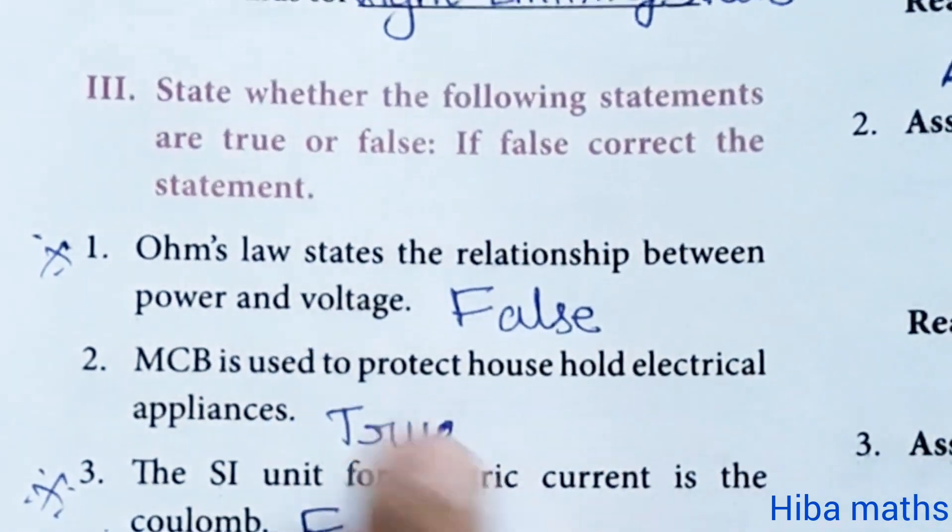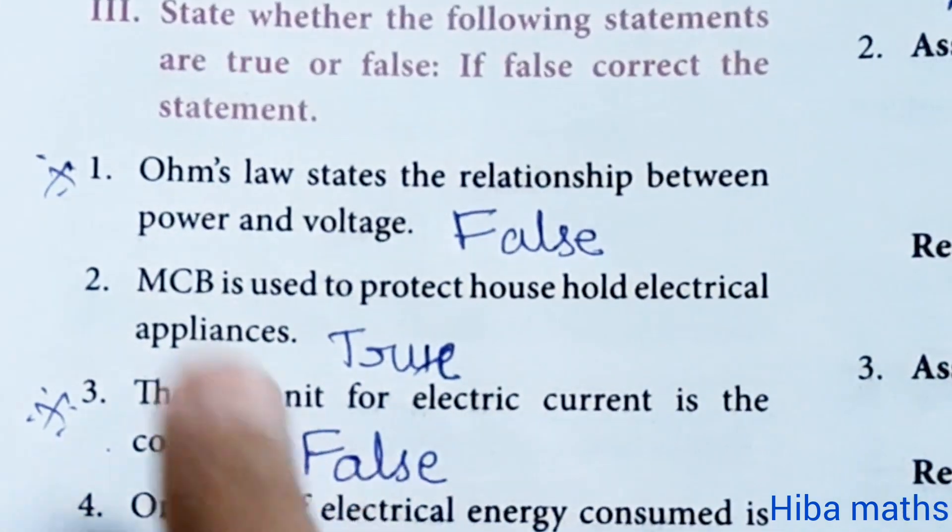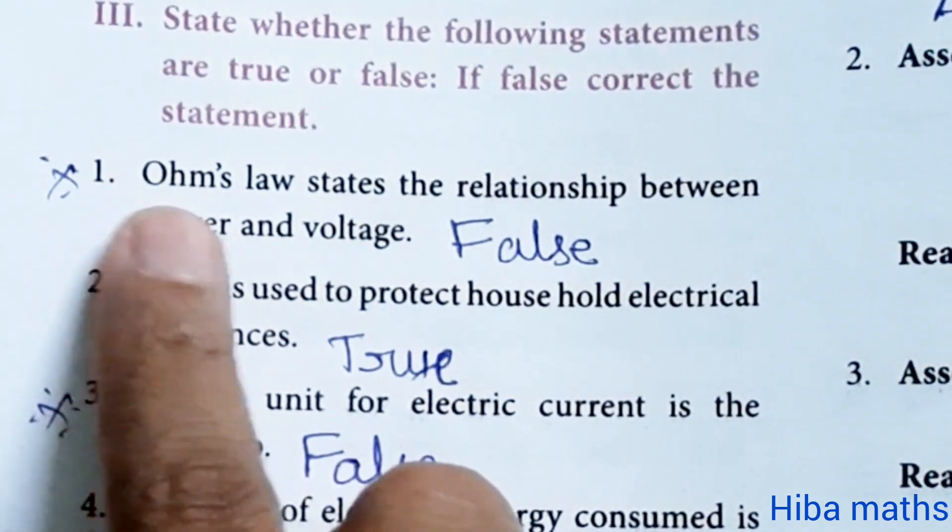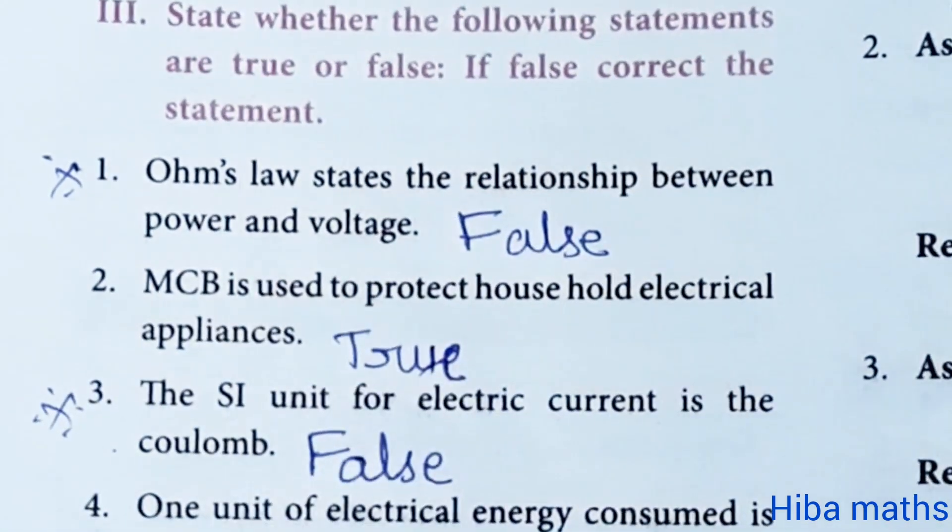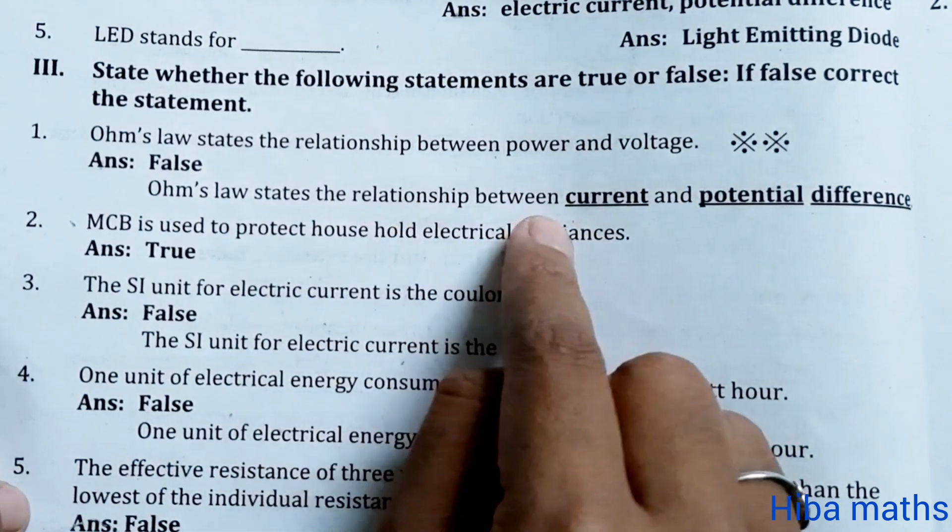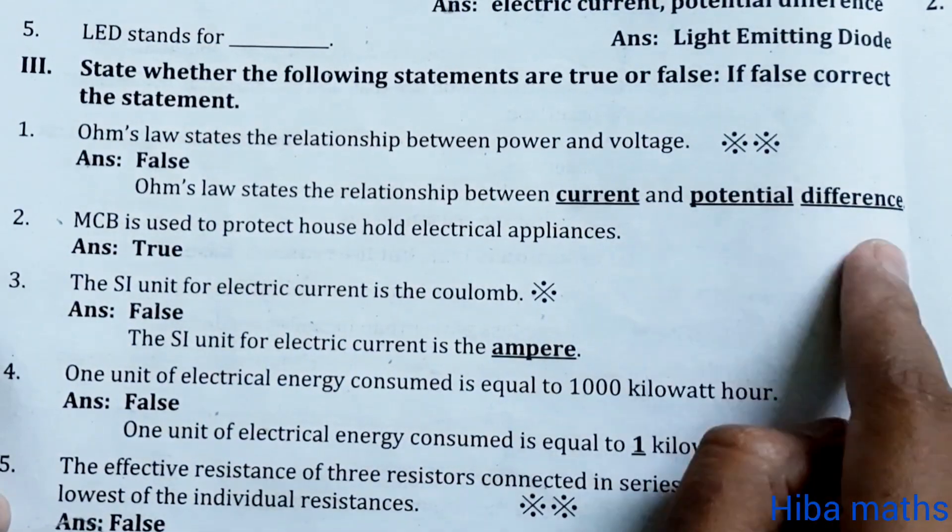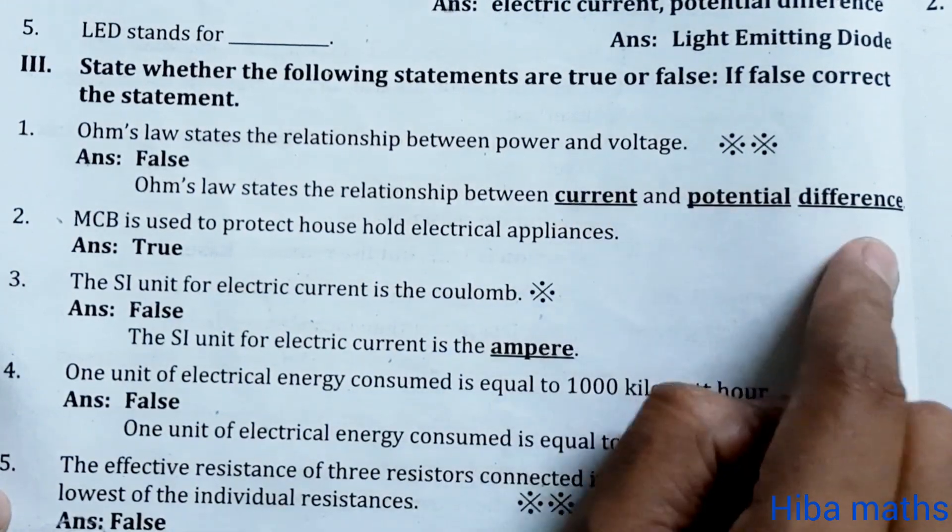State true or false. If false, correct the statement. First question: Ohm's law states the relationship between the power and voltage. False. Ohm's law states the relationship between current and potential difference.